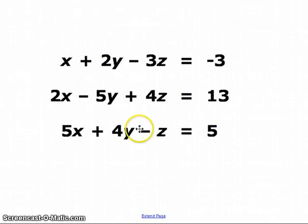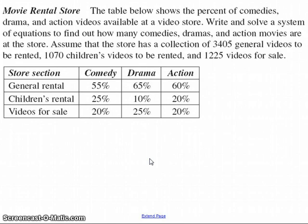Let's look at what one of these might look like. You've got, as I say, x and y and z, and instead of two equations, you've got a third equation here. In real life, you might see one in a situation such as this, where you've got three different categories of movies, comedy, drama, and action, and three different types of business, the general rentals, the rentals specifically for children, and then the ones for sale.